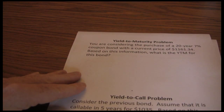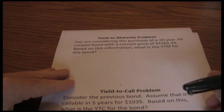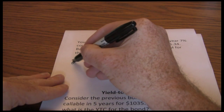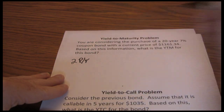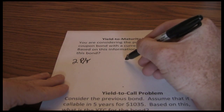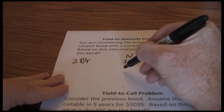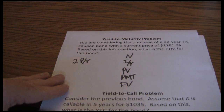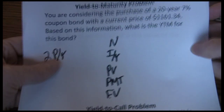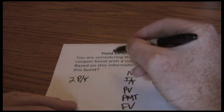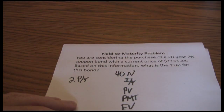We're using our five-key approach, and we want to set our financial calculator up to two periods per year. The first thing we need is to recognize two periods per year, and then we have our five-key approach. The first thing we want is our N. We have 20 years — 20 years is 40 semi-annual periods, so our N is 40.